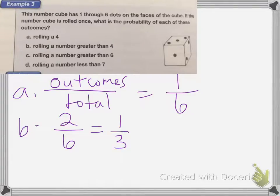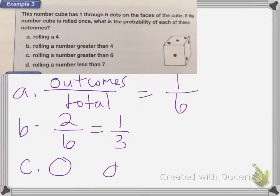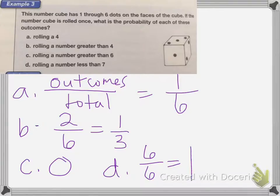On C, what is the probability of rolling a number greater than six? Well, there are no numbers greater than six, so the probability of rolling a seven or eight is zero — you can't do it. For D, rolling a number less than seven: all of the numbers on a dice are less than seven. So that's six out of six numbers, which is equal to one. The probability of rolling a number less than seven is one.